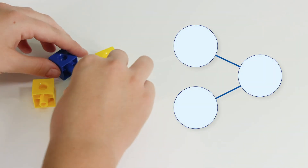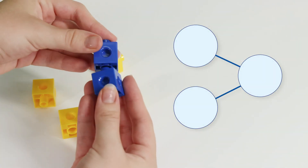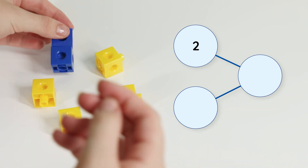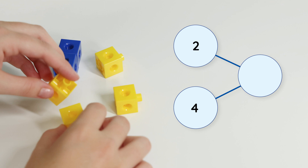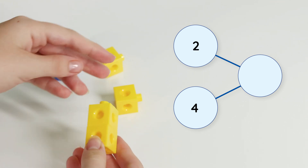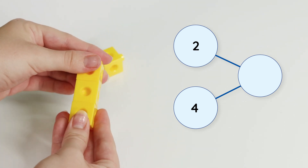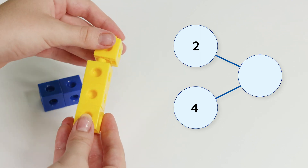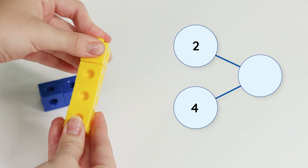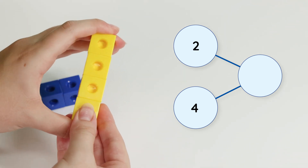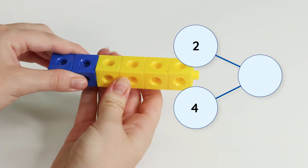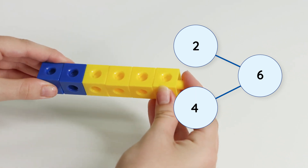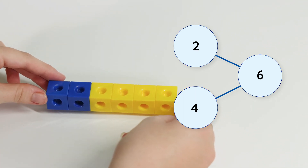Let's make number bonds. We have two blue cubes and four yellow cubes. Two and four make six. There are six cubes in all.